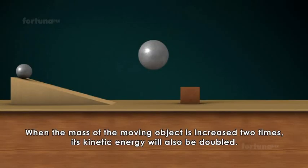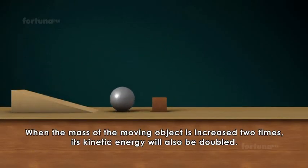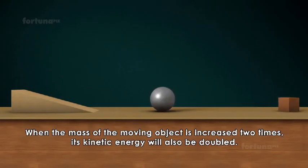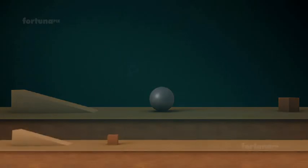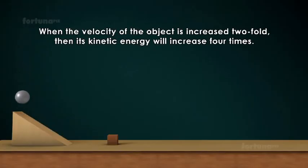When the mass of the moving object is increased two times, its kinetic energy will also be doubled. When the velocity of the object is increased twofold, then its kinetic energy will increase four times.